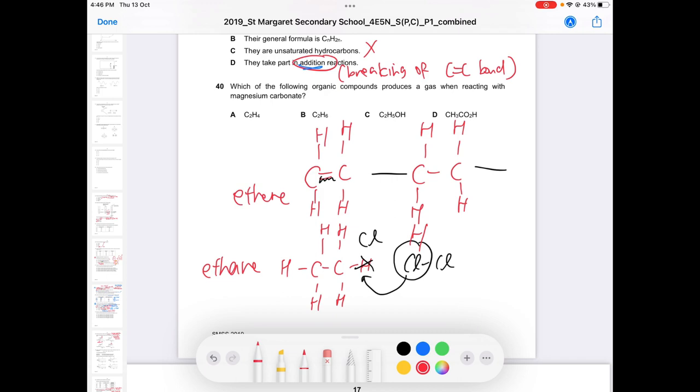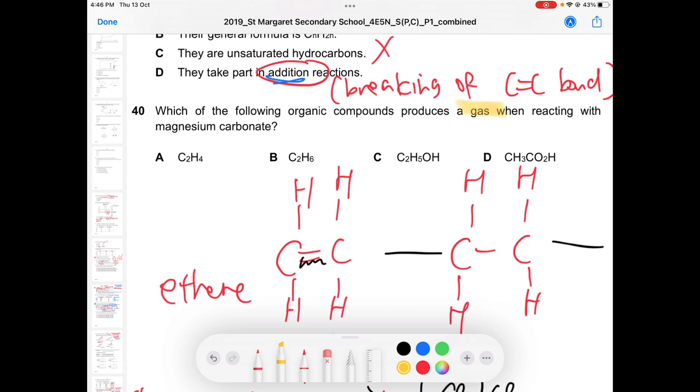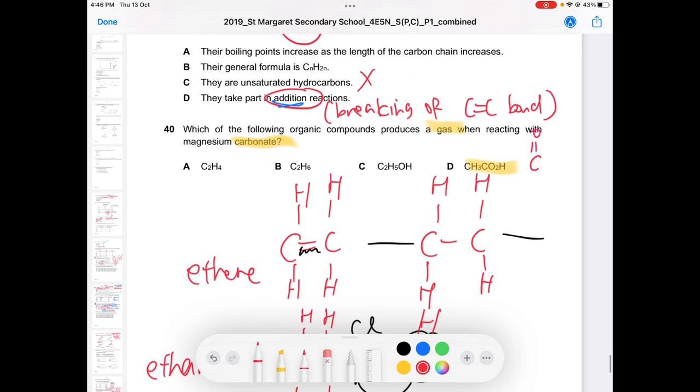Then the last one, which one produces a gas? Carbonate will be acid, so it's my carboxylic group. My C double bond O-O-H, my carboxyl group.